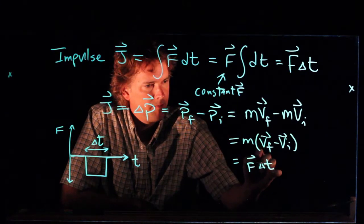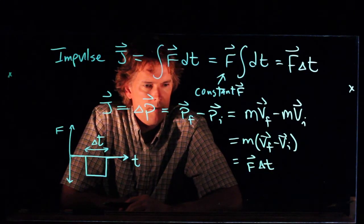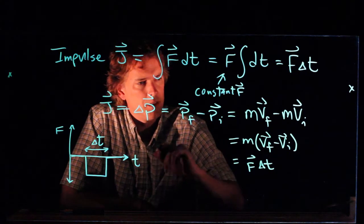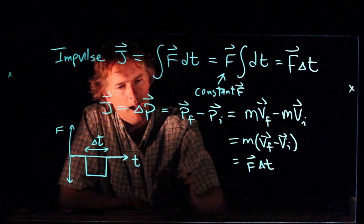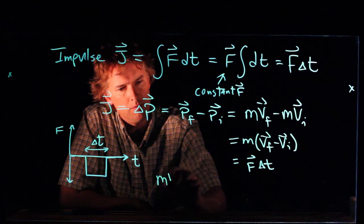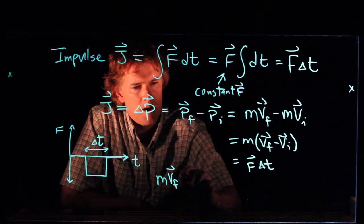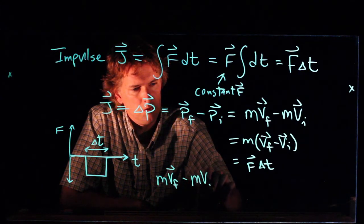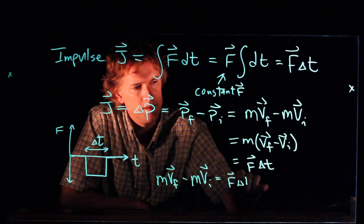So if that's our f and this is our delta t, then we can, for instance, calculate what the final velocity is. So if I look at this last equation, I have mv final minus mv initial equals f delta t.